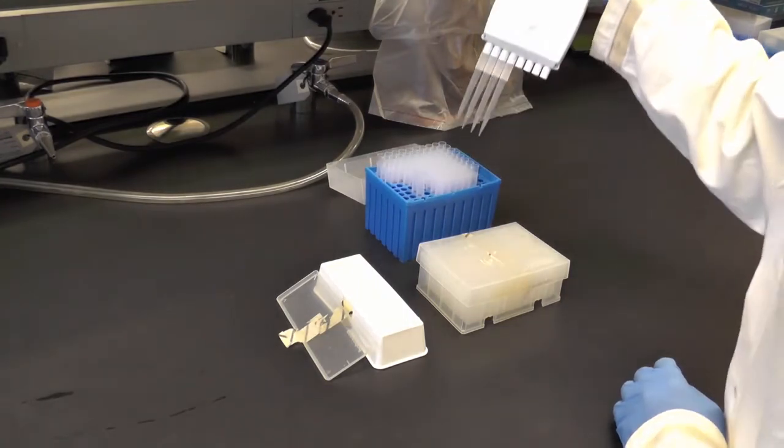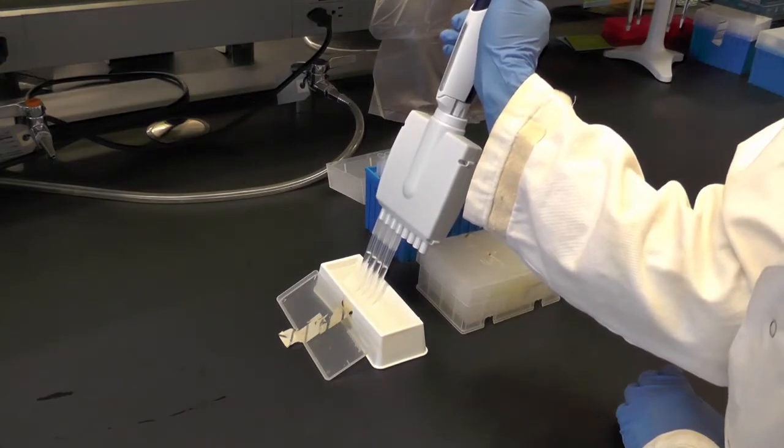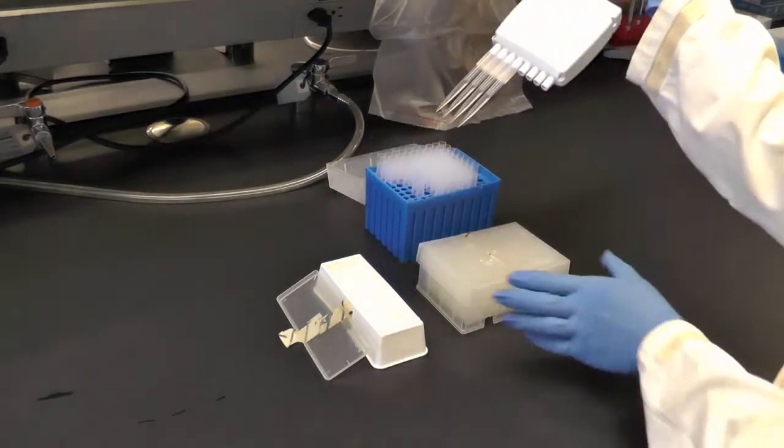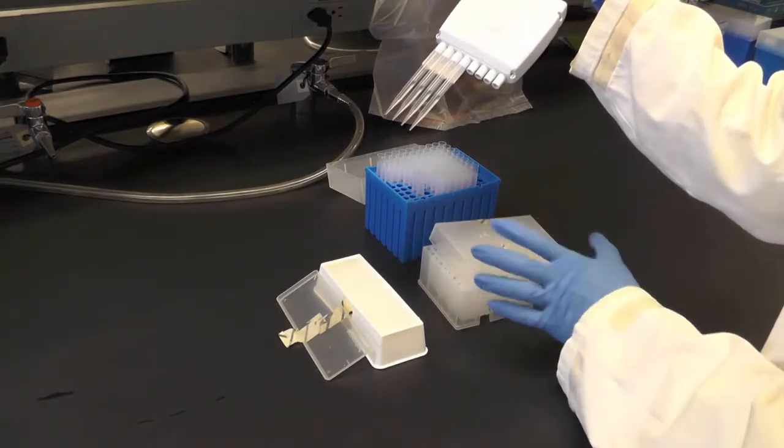In this example, we are using a diluent volume of 450 microliters. Insert the tips into the liquid in the reservoir and draw up. Ensure that all tips draw up the same amount.